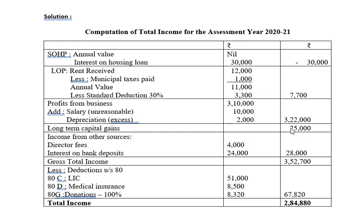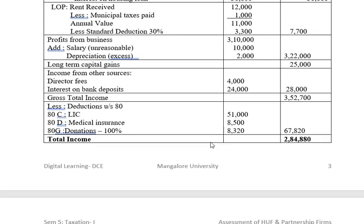Long-term capital gains is Rs. 25,000. Income from other sources — director's fees as well as interest on bank deposits — comes to Rs. 28,000. Gross total income is Rs. 3,52,700. Deductions under Section 80: LIC Rs. 51,000; medical insurance Rs. 8,500; donation for family planning at 100%. Total deductions are Rs. 67,820, and the total income is Rs. 2,84,880.